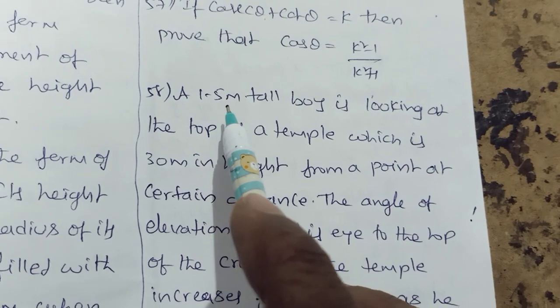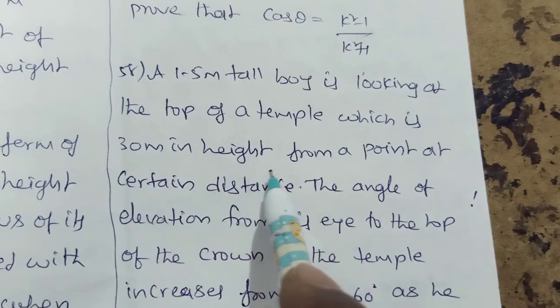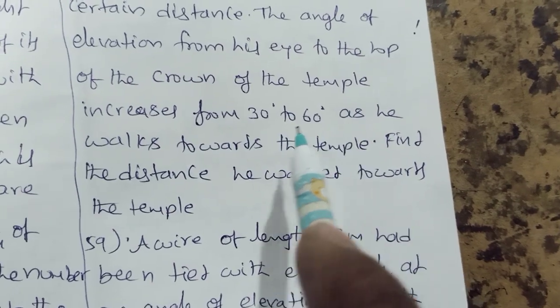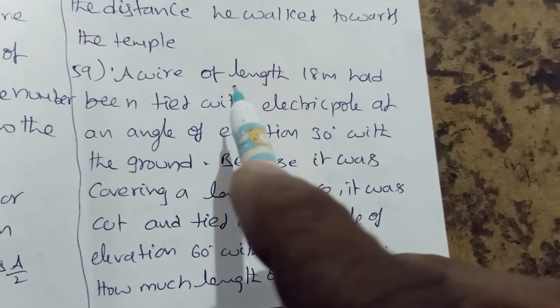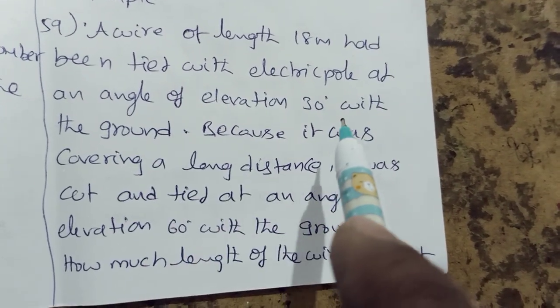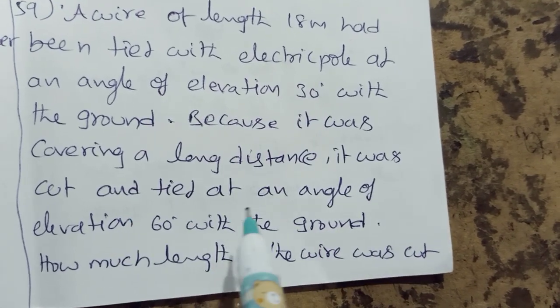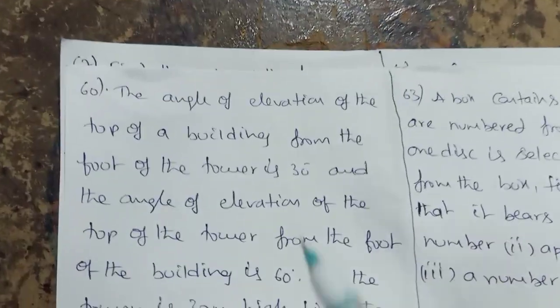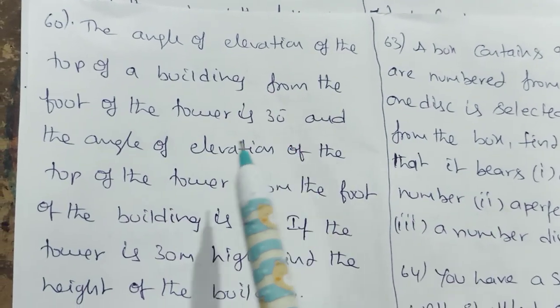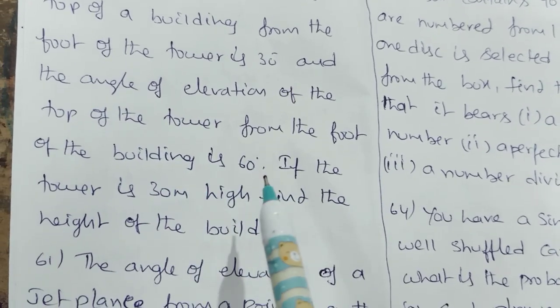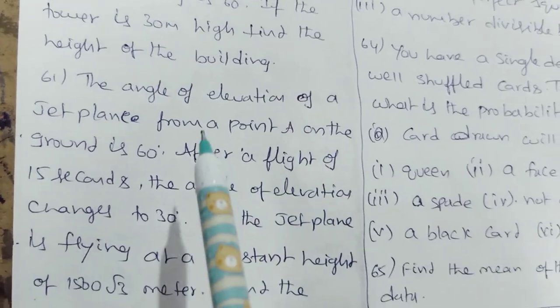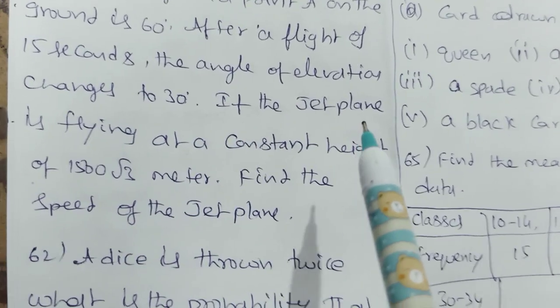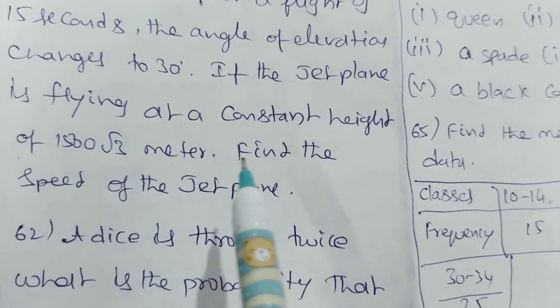Applications of trigonometry. A 1.5 meter tall boy is looking at the top of a temple which is 30 meter in height from a point at a certain distance. The angle of elevation from his eye to the top of the crown of the temple increases from 30 degree to 60 degree as he walks towards the temple. Find the distance he walked towards the temple. A wire of length 18 meter had been tied with an electric pole at an angle of elevation 30 degree with the ground. Because it was covering a long distance, it was cut and tied at an angle of elevation 60 degree with the ground. How much length of the wire was cut? The angle of elevation of the top of a building from the foot of the tower is 30. The angle of elevation of the top of the tower from the foot of the building is 60. If the tower is 30 meter height, find the height of the building. The angle of elevation of a jet plane from a point A on the ground is 60. After a flight of 15 seconds, the angle of elevation changes to 30. If the jet plane is flying at a constant height of 1500 root 3 meter, find the speed of the jet plane.